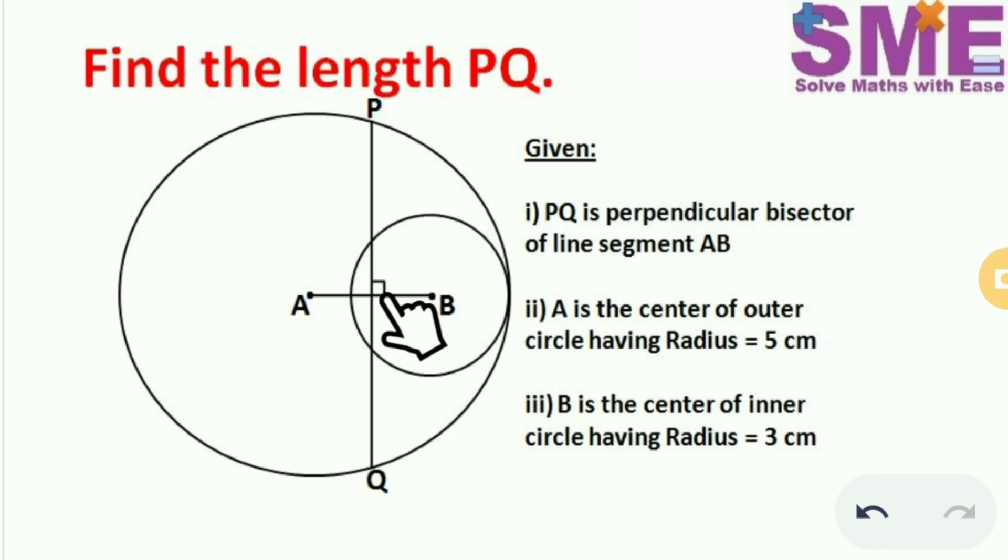The chord PQ which is present in the outer circle is the perpendicular bisector of line segment AB, and we need to find the length of the chord PQ.